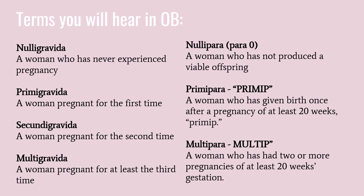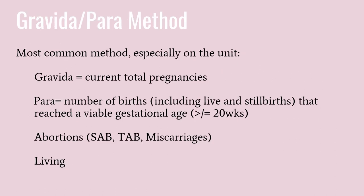You should be familiar with some terms you might hear in the OB setting. The gravida/para method is the most common method you will see on units. Gravida means the current total pregnancies, and para is the number of births — including live and stillbirths that reached a viable gestational age. Nothing under 20 weeks is counted; only births after 20 weeks.